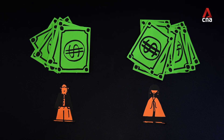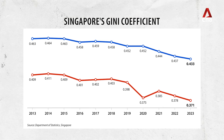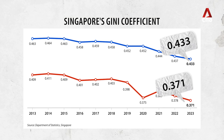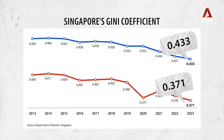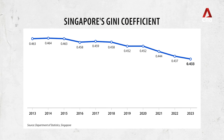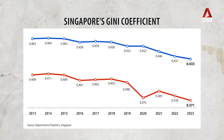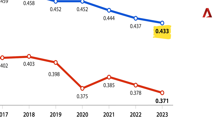These transfers also lower our Gini coefficient. To help people understand how much they affect the figure, the Department of Statistics gives us two numbers, as shown in the graph of Singapore's Gini coefficient over the last decade. The top line is the figure before adjusting for government transfers and taxes; the line below is after. In 2023, our Gini coefficient was 0.433 before transfers and taxes, and 0.371 after — which, according to the government, is the lowest it's been in 20 years.